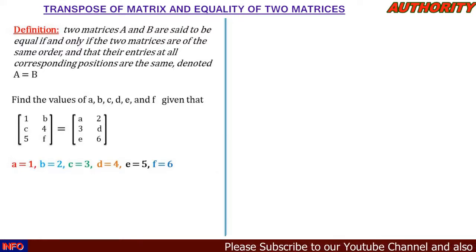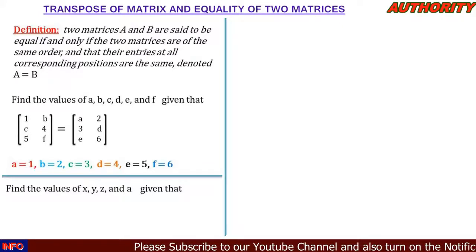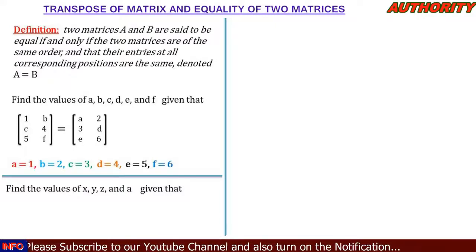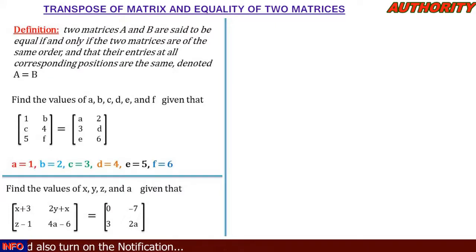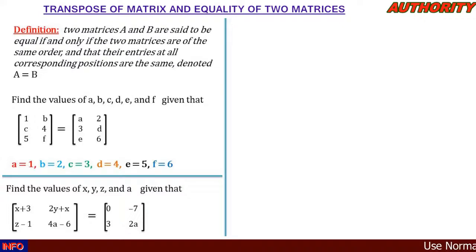Let's take another example. Find the values of x, y, z, and a, given that the matrix [x+3, 2y+x; z-1, 4a-6] is equal to the matrix [0, -7; 3, 2a].